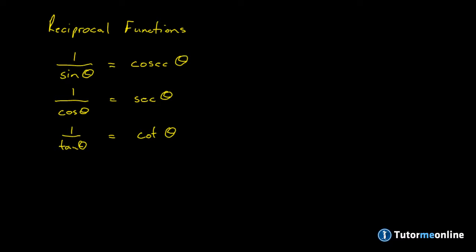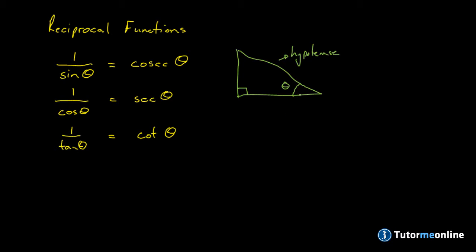We can also define these as reciprocals for any right-angled triangle, the same as what we did with the sine, cosine and tangent of theta, where we looked at the right-angled triangle and the sides in relation to the angle theta. The hypotenuse is the side opposite the 90-degree angle, then we have the adjacent side and the opposite side.